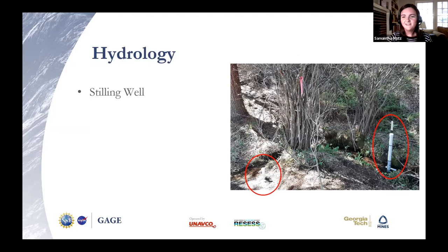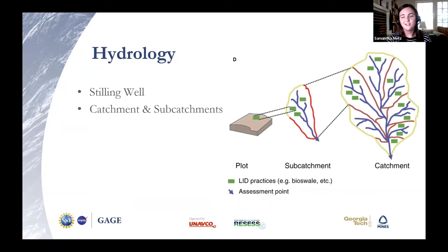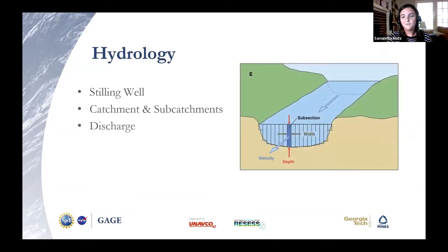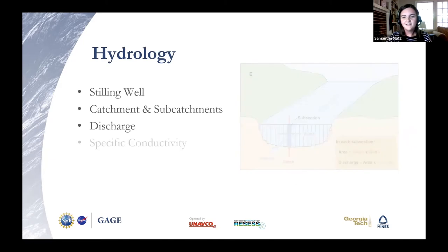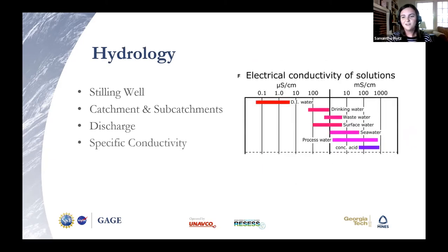On to the hydrology side. Stilling wells take measurements of the surface water, and you can see the groundwater well right next to the stream. A catchment is defined as the collection of rainfall over a drainage area, as seen in figure D. For scaling purposes in this project, we consider Hotel Gulch a single catchment, but divided into subcatchments to differentiate the contributing area per site. We look at two hydraulic measurements: the first is discharge, or the volume of water passing through a point over time, seen in figure E. Secondly, we focus on specific conductivity, which is the ability of water to conduct electrical current. A high specific conductivity signifies a higher concentration of dissolved solutes in the water.